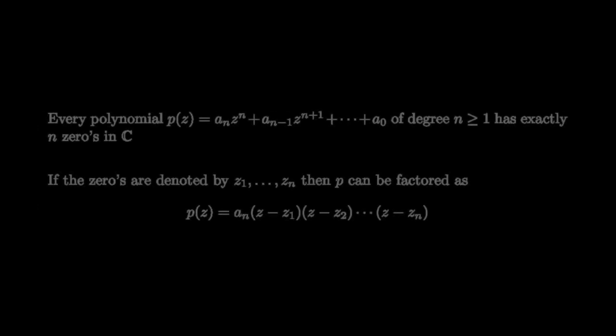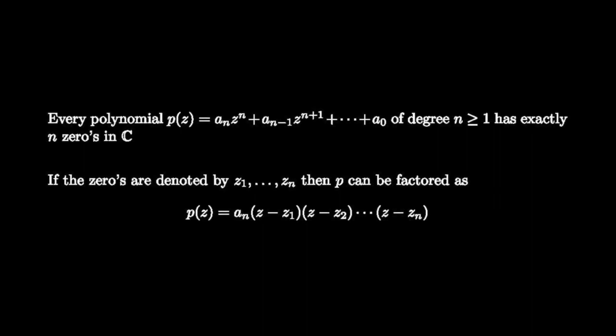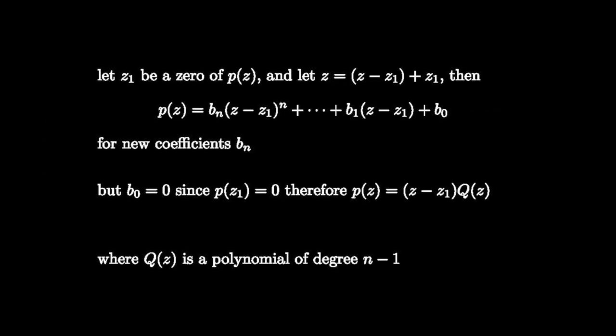We are now ready to prove the fundamental theorem of algebra. By the previous theorem, we can find a zero of p, calling it z1. It's possible to rewrite p as a polynomial in z minus z1 by changing variables from z to z minus z1 plus z1. Writing out this polynomial, we find a new set of coefficients b1 through bn. We can see that b0 equals zero since p of z1 equals zero. Therefore, we can factor z minus z1 out of p, finding a new polynomial q of degree n minus 1. Continuing this process, we prove the theorem by induction.